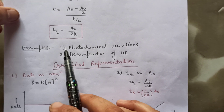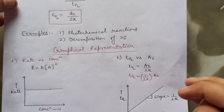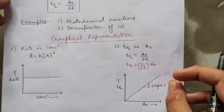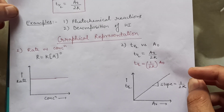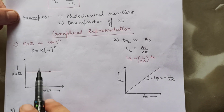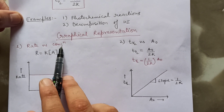Photochemical reactions and the decomposition of HI are two examples of zero-order reactions. Now let's understand the graphical representation of zero-order reaction. There are three graphs to learn. The first is between rate and concentration.